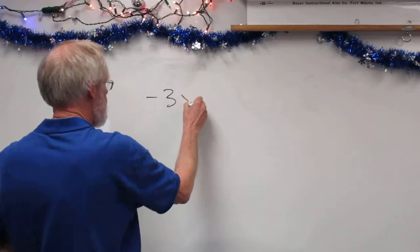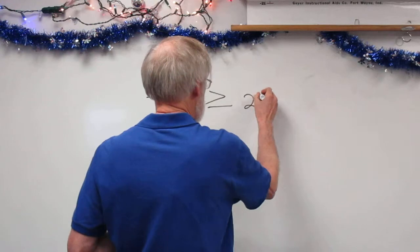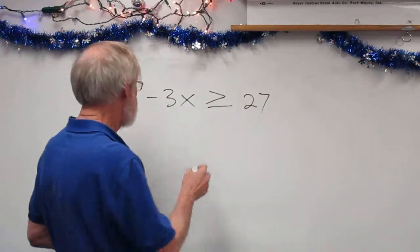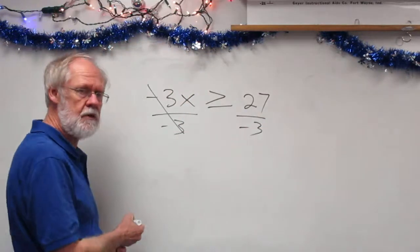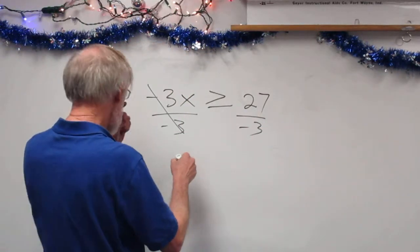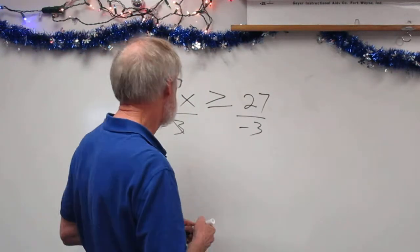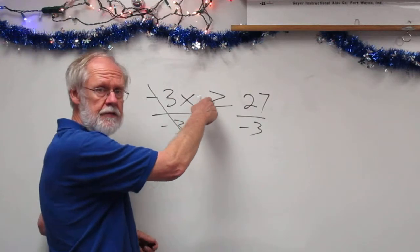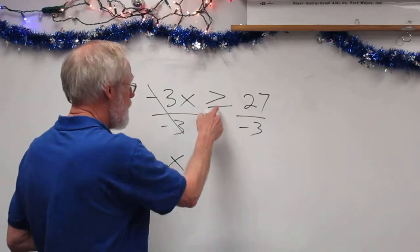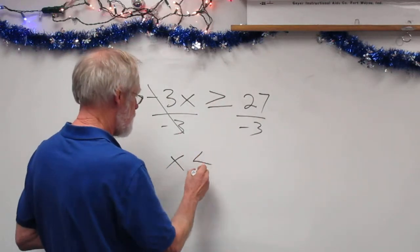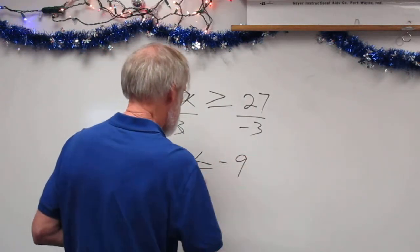Negative 3x is greater than or equal to 27. To solve this, we need to divide by negative 3. The key to inequalities is: when you multiply or divide an inequality by a negative number, you change the direction of the inequality sign. So here, dividing by a negative number, I get x, and I change the direction of the sign to less than or equal to instead of greater than or equal to, and I get negative 9.